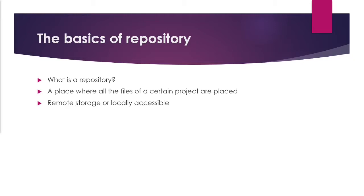Git basically saves all the files in this repository — all the files and any project-related information such as the changes that we made or the history. A repository in Git is considered as your project folder. It has all the project-related data, so different projects have different repositories.